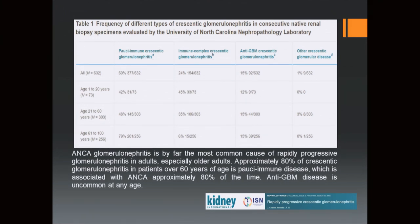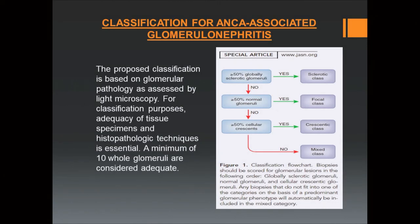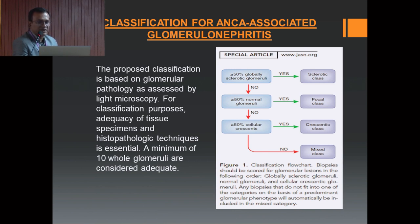ANCA-associated glomerulonephritis is by far the most common cause of rapidly progressive glomerulonephritis in adults, especially older adults. Approximately 80% of crescentic glomerulonephritis patients over 60 years of age have pauci-immune disease, which is associated with ANCA in approximately 80% of cases. Anti-GBM disease is very uncommon in any age. The classification of ANCA-associated glomerulonephritis is based on light microscopy and requires a minimum of 10 whole glomeruli. The four classification types are: sclerotic, focal, crescentic, and mixed class.